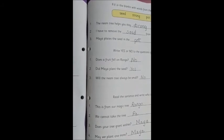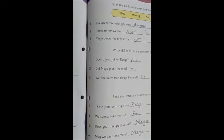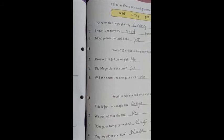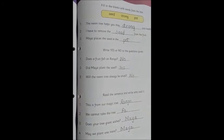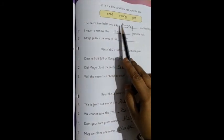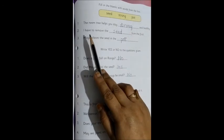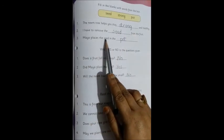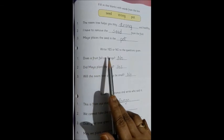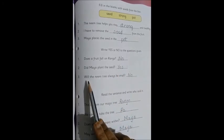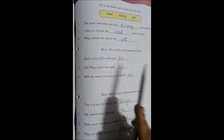So now we have seen who said to whom also. In this similar manner, you will be doing page 73 in your book. Do you want to read it once more? We can read it once more. The neem tree helps you stay strong and healthy. I have to remove the seed from the fruit. Maya places the seed in the pot. Does a fruit fall on Ranga? No. Did Maya plant the seed? Yes. Will the neem tree always be small? No.